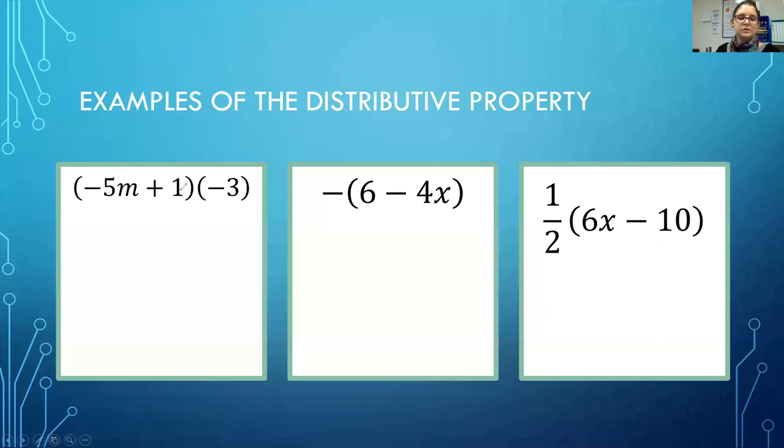We're increasing in complexity as we go. Not every distributive property is written with the number being multiplied at the front. Sometimes they're written at the end, so in this case it's written after my variable and numbers being added.